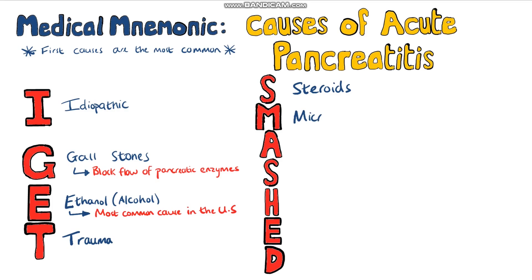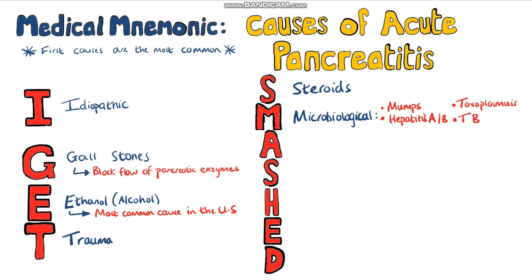M traditionally is for mumps, but I use M for microbiological, because acute pancreatitis can also be caused by toxoplasmosis, hepatitis A and hepatitis B, as well as things like TB.